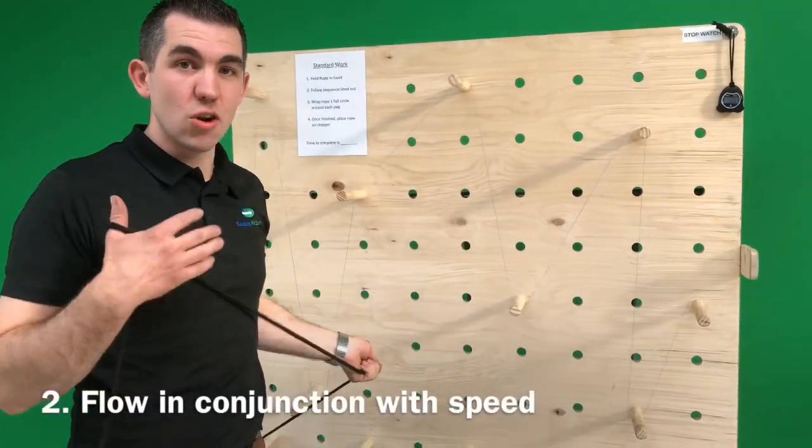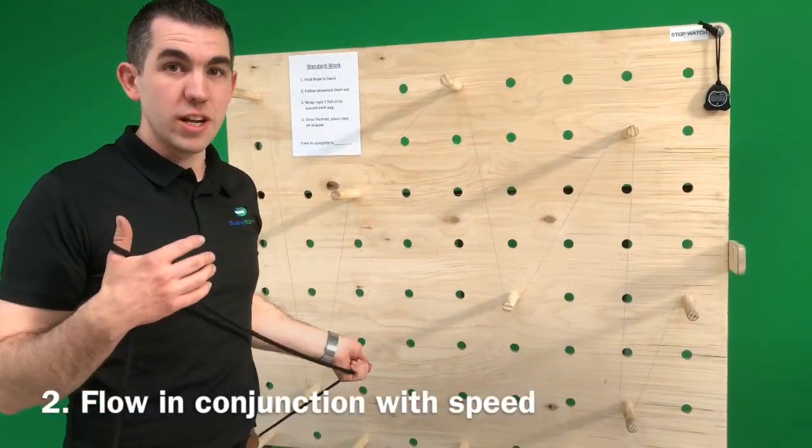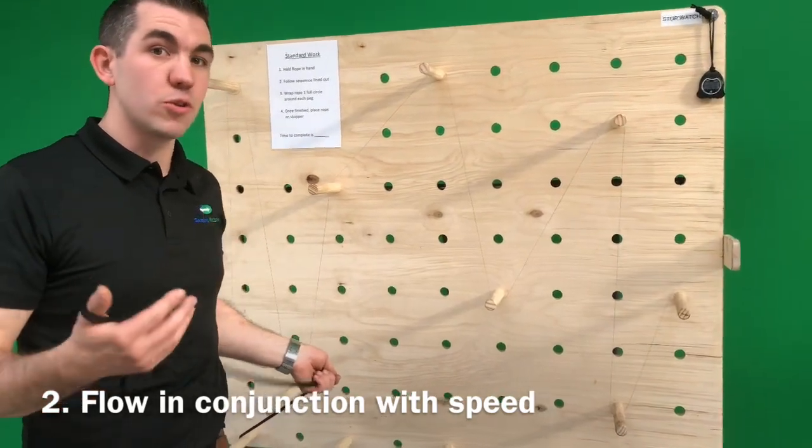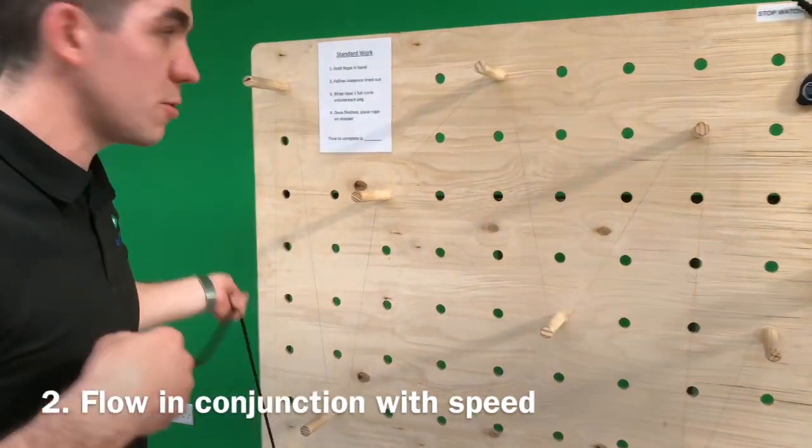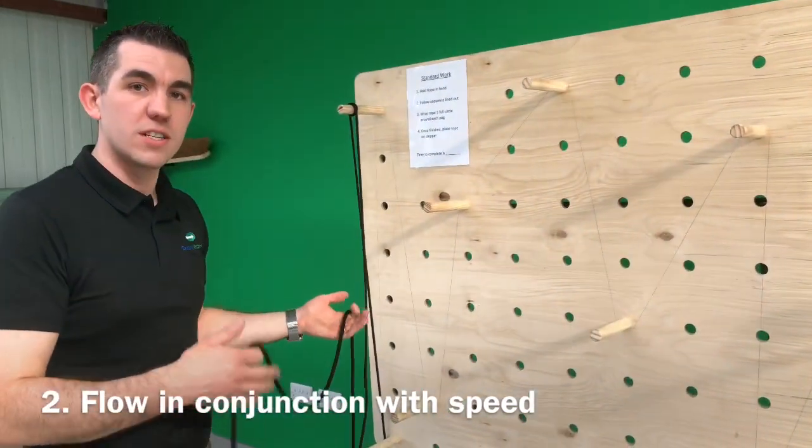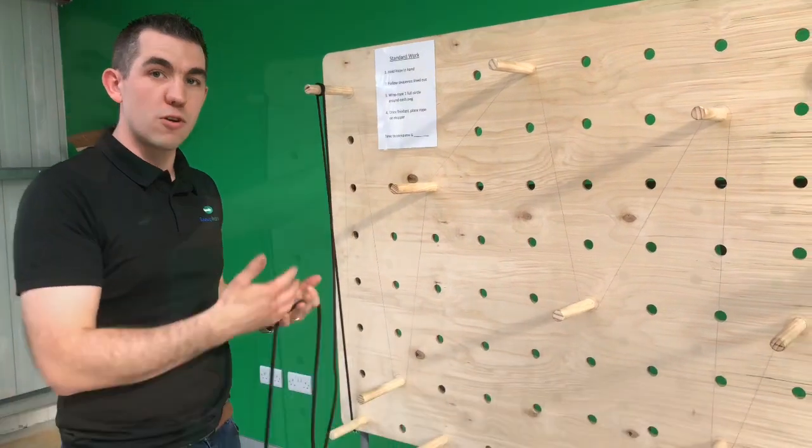So the next key learning here is that flow on its own is okay, but you need flow in conjunction with speed. So I'm going to do an example of me going too fast. This is too fast, too much speed. Okay, so I'm trying to go too fast. There's too much speed and there's poor flow.